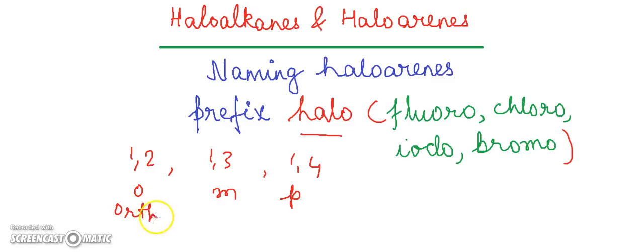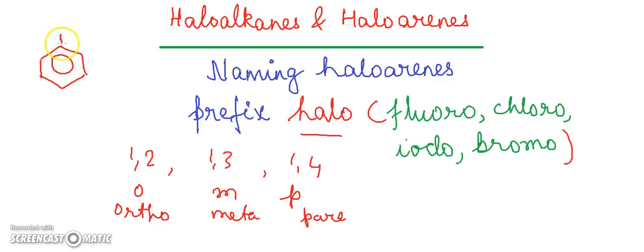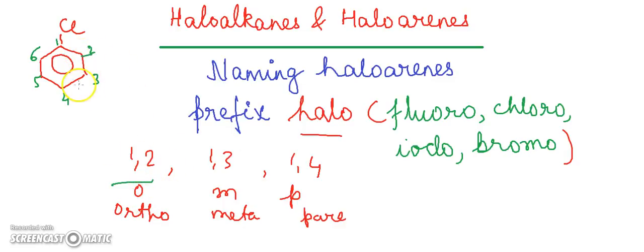What are the positions ortho, meta, and para? You have a benzene ring where numbers start from the substituent: one, two, three, four, five, six. If any halogen derivative is present on the second carbon atom, the name is ortho. If it is present on the third, the name is meta. And if it is present on the fourth, the name is para.